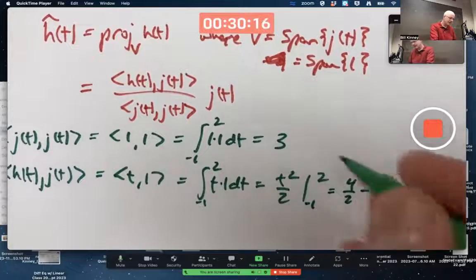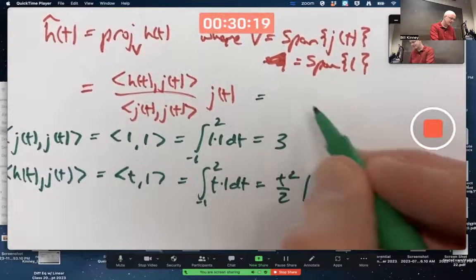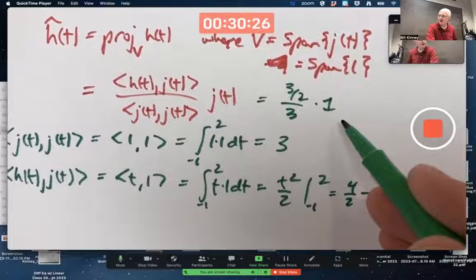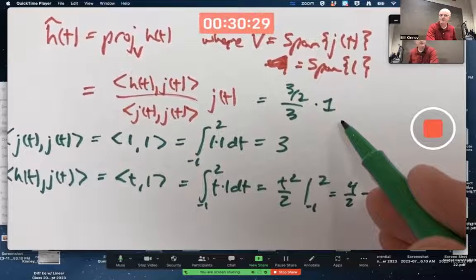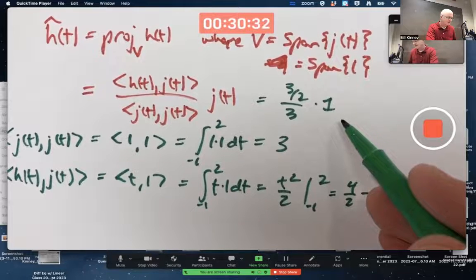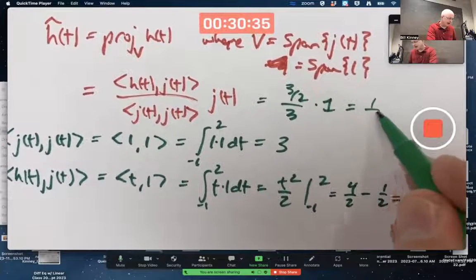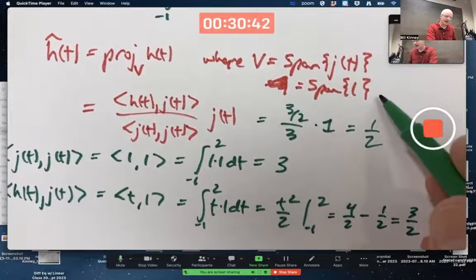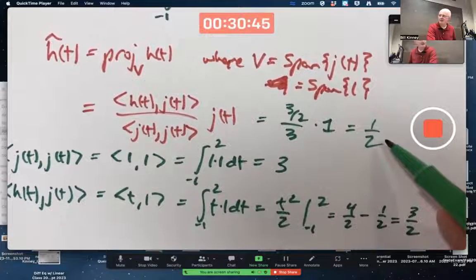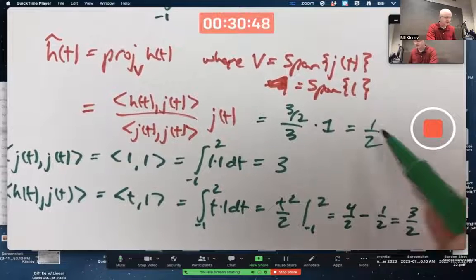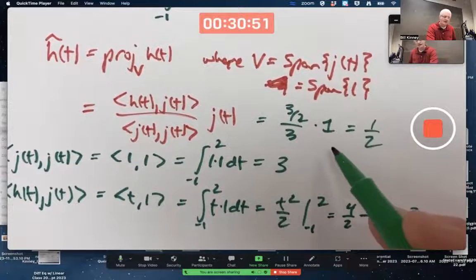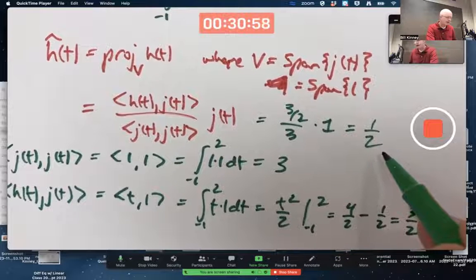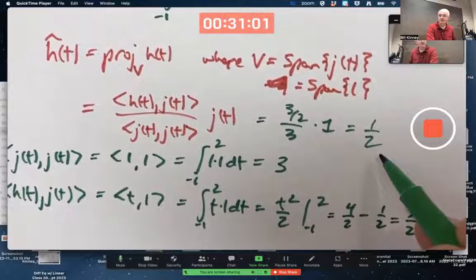Plug those numbers up here, and what am I going to get? Three halves over three times the constant function one. Now, that is a constant function one for my example, but I could have done an example where that's not a constant function. Ultimately simplifying to the constant function one half. The orthogonal projection of H onto the subspace spanned by J. It's got to be a multiple of J. It's got to be a constant function. Again, that's a one there because that's a one there. In general, this doesn't have to be a constant function, but for this example, it is. This one's got to be a constant function as well. It's not representing the number one half. It's representing the function one half. Constant function.